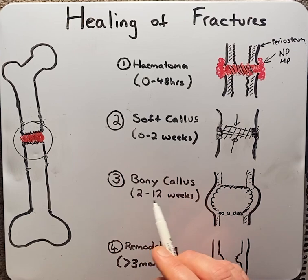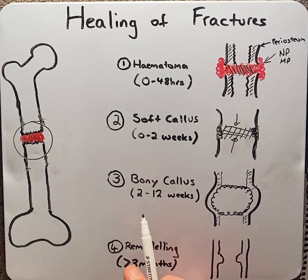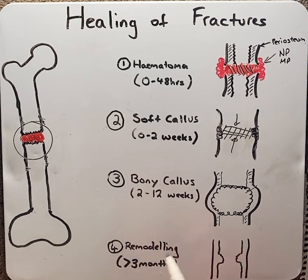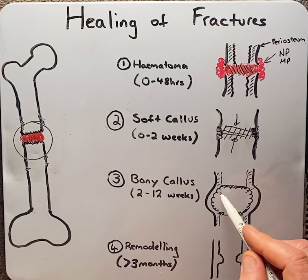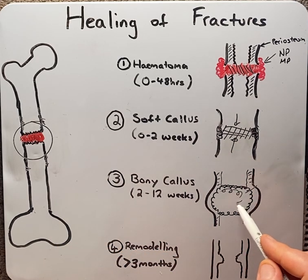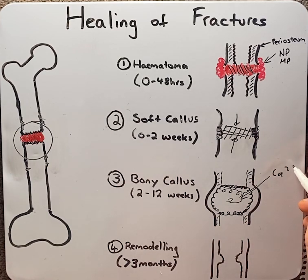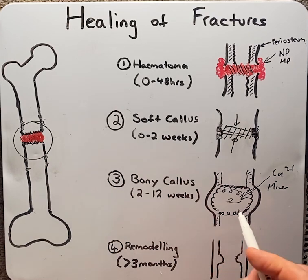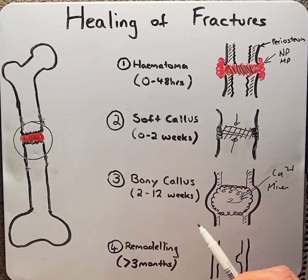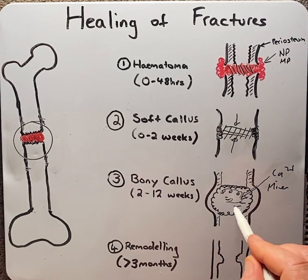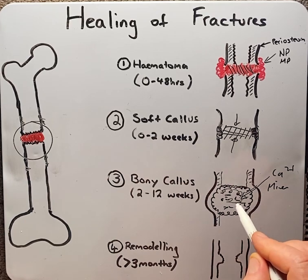Moving into the bony callus stage, which occurs between the second and 12 weeks post-fracture, the soft callus — which is all the osteoid tissue — starts to become mineralised. Calcium and minerals such as phosphate, sometimes known as hydroxyapatite, start to mineralise and make the callus hardened.